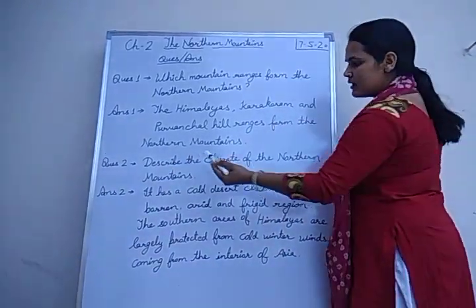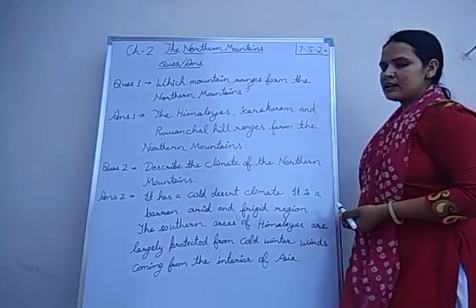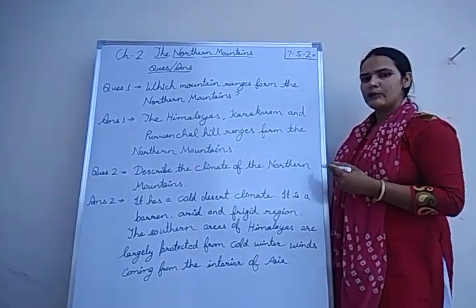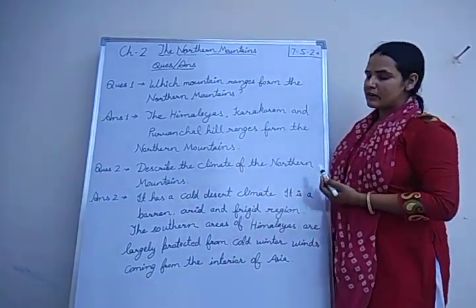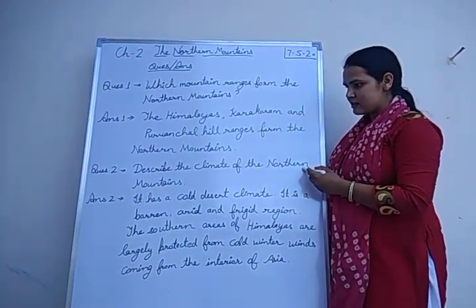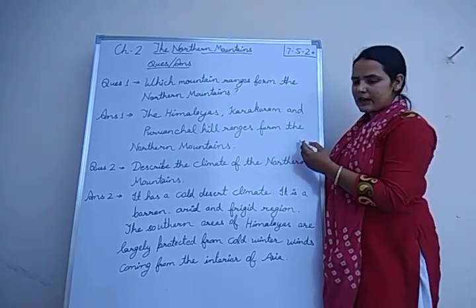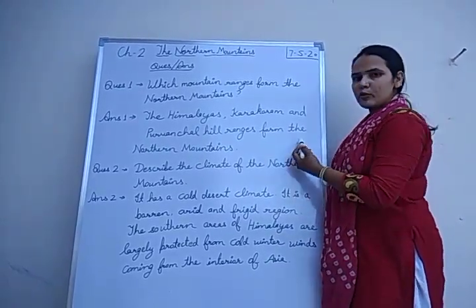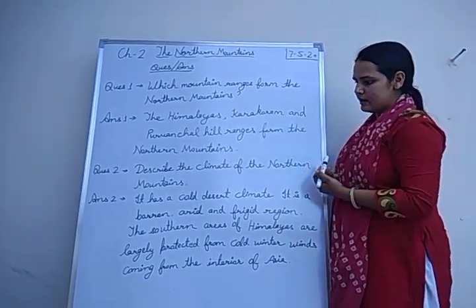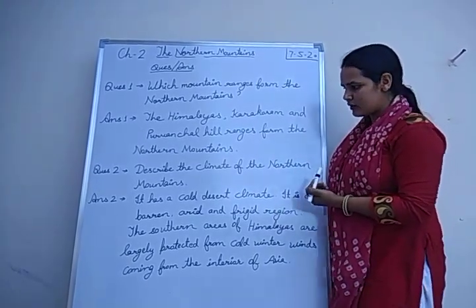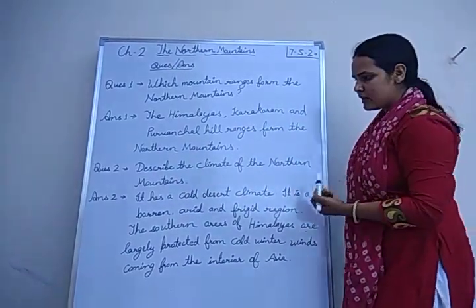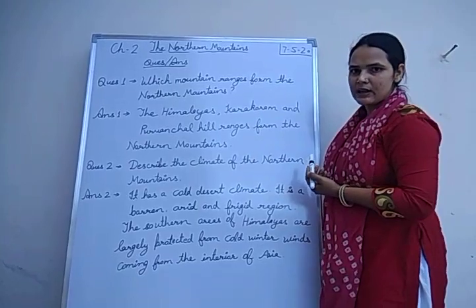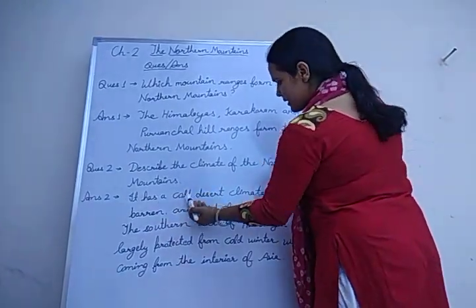The next question is: describe the climate of the northern mountains. The climate of the northern mountains affects the climate of the whole country. These northern mountains create a barrier so that the winds coming from the Bay of Bengal and Arabian Sea cannot escape outside India, causing heavy rainfall in the northern plains. The northern mountains have a cold desert climate, with the highest mountain peaks always covered with snow.